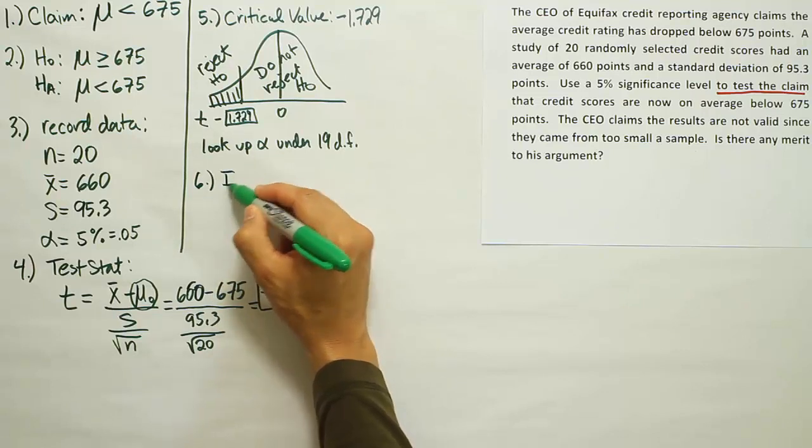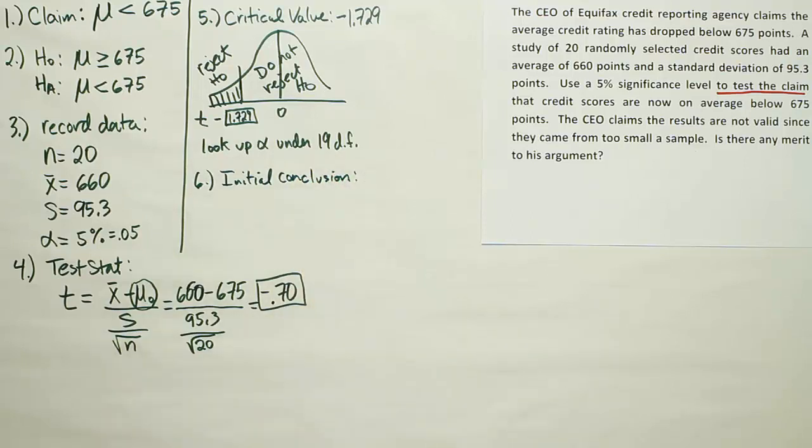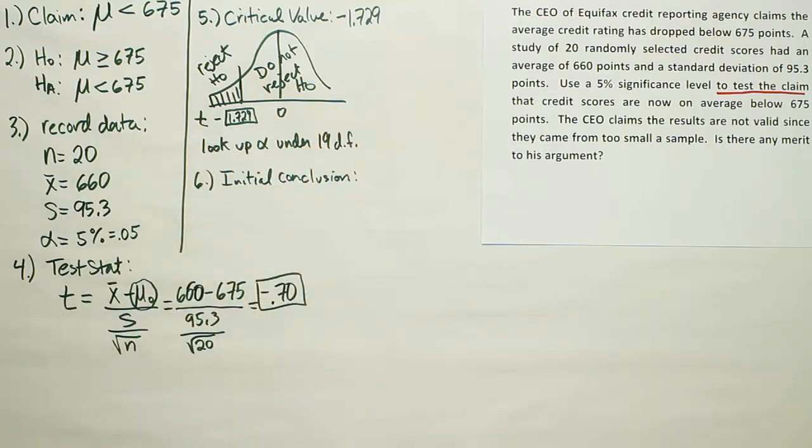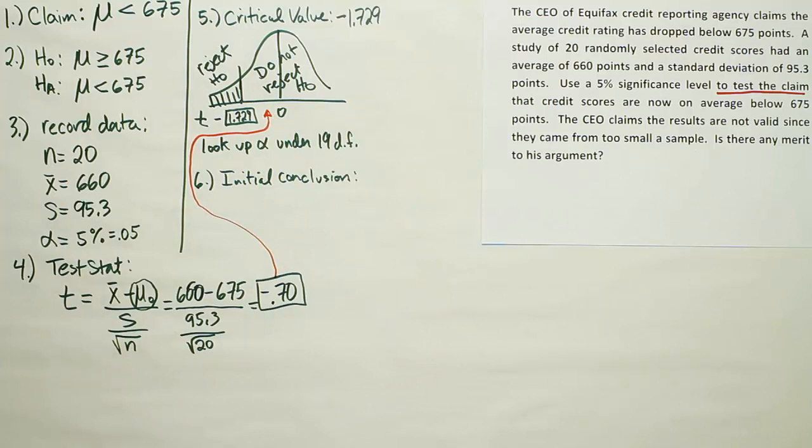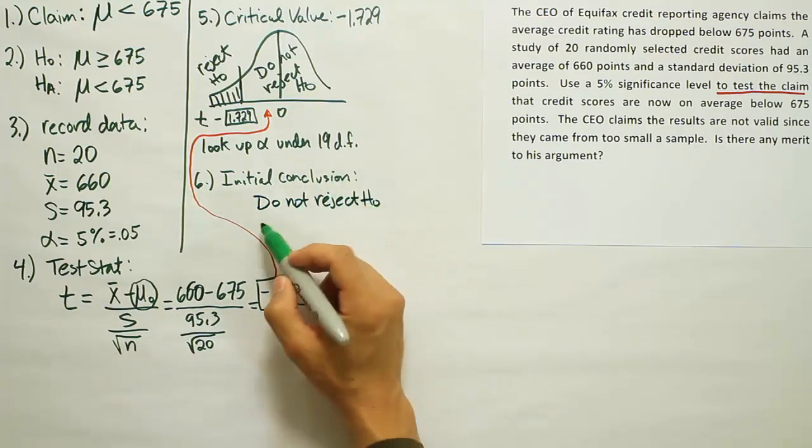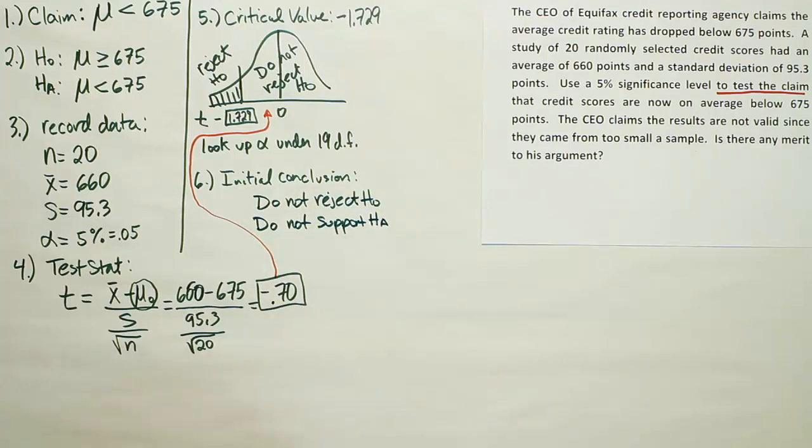Now step six, we want to form the initial conclusion. In order to form the initial conclusion, we want to plot this test stat on this number line and see where it lands. See if it lands in the do not reject, or if it lands past that on the left and lands in the reject region. Well, it's only minus 0.7, so while it is on the left, it's not far enough to the left to cause us to reject H0, so we're going to conclude that we do not reject H0. Therefore do not support HA. Remember, if you do not reject, you do not support.